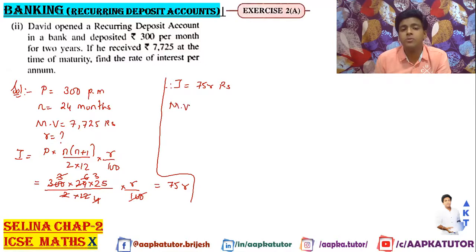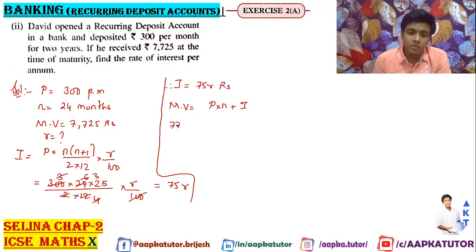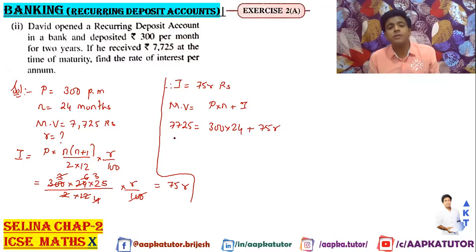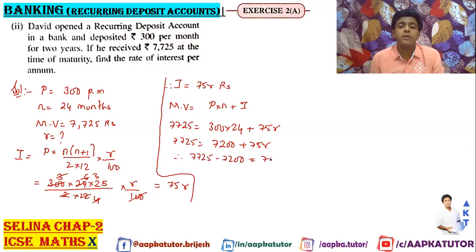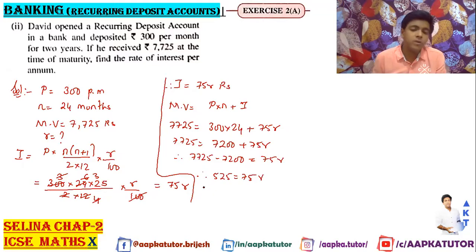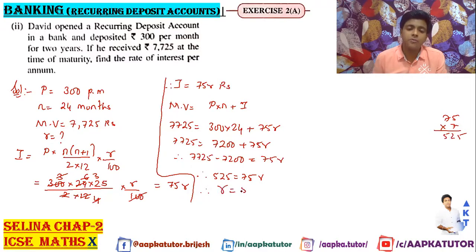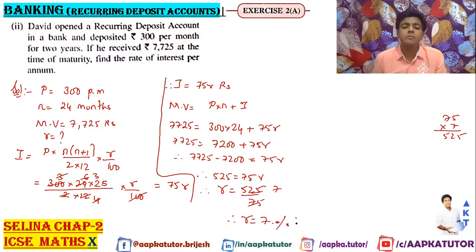So the maturity value is given by P × n + I. Maturity value is 7,725. So 7725 = 300 × 24 + 75r = 7200 + 75r. Therefore 7725 − 7200 = 525 = 75r. So R = 525 / 75 = 7. Therefore R is equal to 7% per annum.